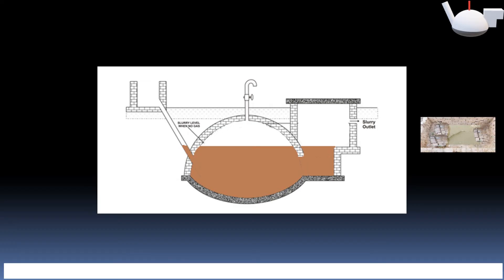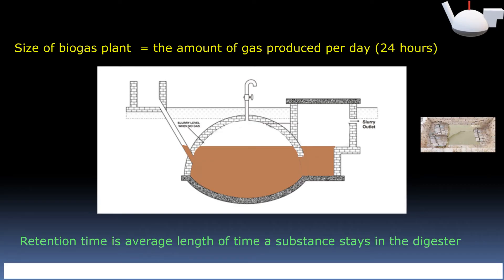The amount of slurry depends upon size of biogas plant and retention time. Size of biogas plant is referred to as the amount of gas produced per day, that is 24 hours. For example, if 6 cubic meters per day is the size of biogas plant, then the gas produced in 24 hours will be 6 meter cube. Retention time is the average length of time a substance stays in the digester.